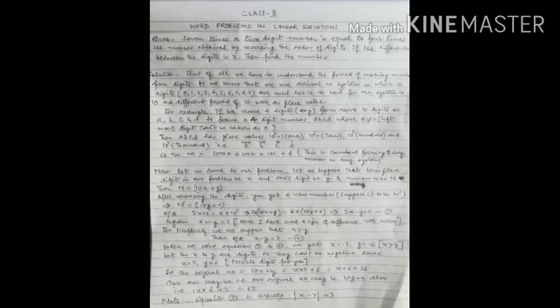The question says that seven times the original number is equal to four times the number obtained after reversing the digits. It means 7 × n should be equal to 4 × n-dash. When you substitute the values of n and n-dash, you get the equation 2x − y = 0, and that is our first equation.